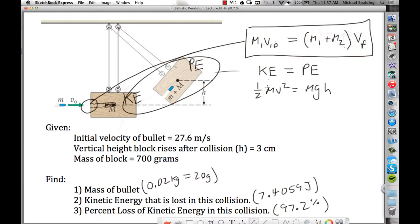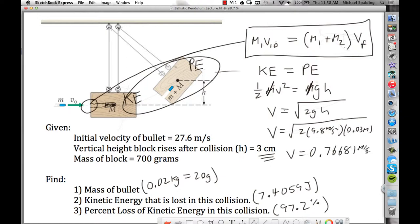Something kind of nice happens here. The mass cancels. And then we're looking for V. We're going to solve this for the velocity immediately after the collision. So that comes out as square root 2GH. So you plug the numbers in, 2 times 9.8. And then make sure you put this height here in meters, 0.03 meter. And then we get a velocity of 0.76681 meter per second.